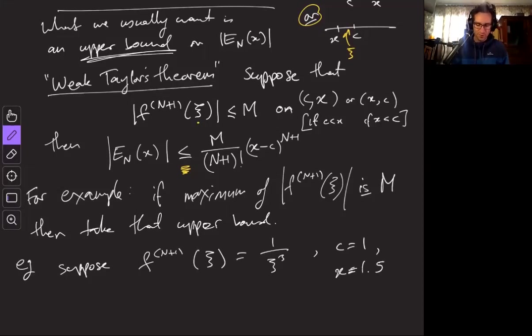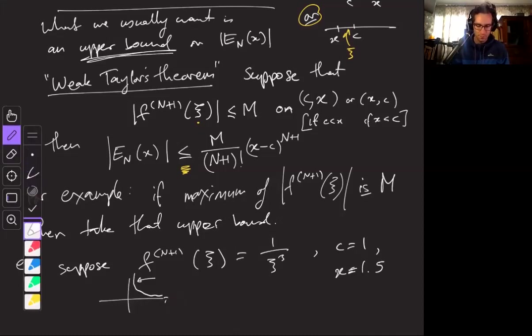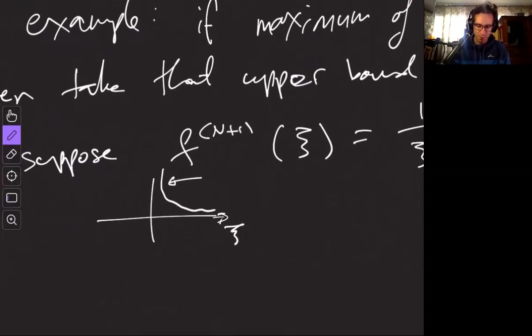So what I'm thinking about is what is the maximum of my function on this little interval here? And I think about it. Well, this is a decreasing function on the interval here. It's going to achieve its maximum when xi is the smallest, that is when it's one. And so this is the maximum value here, which happens to be 1.